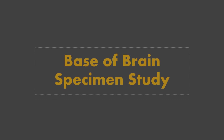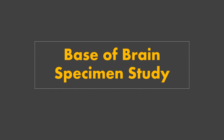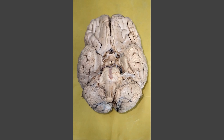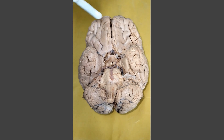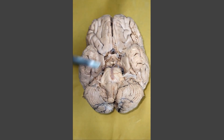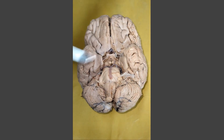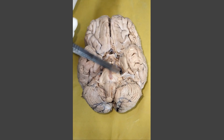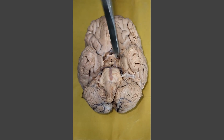Welcome to my video tutorial on specimen study of base of brain. The specimen shows the inferior surfaces of cerebral and cerebellar hemispheres, with the brain stem in the midline. Here is the median longitudinal fissure separating the two cerebral hemispheres, and here is the stem of lateral sulcus separating frontal and temporal lobes. The cerebrum shows anteriorly the orbital surface of the frontal lobe and posteriorly the tentorial surface of the temporal lobe. Here are the right and left cerebellar hemispheres, and in the midline are the medulla oblongata, pons, and midbrain of the brain stem.